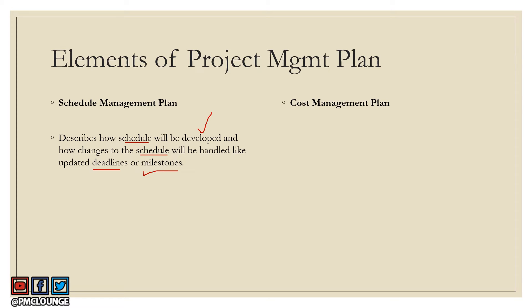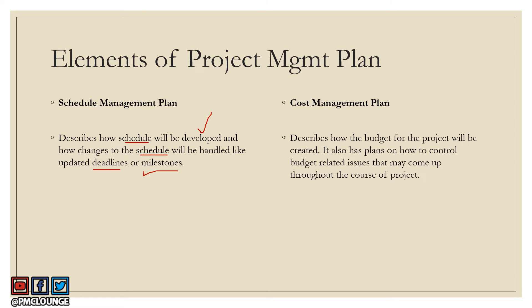The next one is the cost management plan, the output of the plan cost management process. This document describes how the project budget will be created — how much money you need to execute the project and how you arrive at that number. It also has plans on how to control budget-related issues that may come up throughout the course of the project, and how you're going to handle any financial challenges.